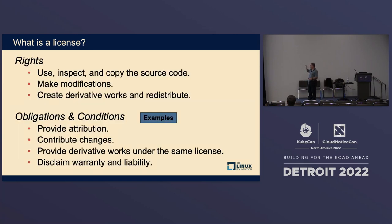The rights that you typically get with an open source license let you inspect and copy the source code, make modifications, and create derivative works. So you are using that open source, mixing it with other open source, or with maybe commercial or proprietary code.